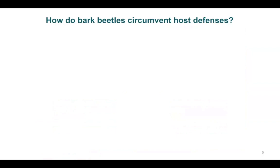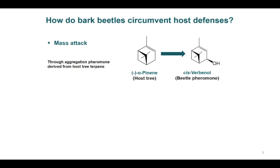Bark beetles feed on phloem tissues rich in different chemicals such as terpenes and phenolics. The interesting question is: how do bark beetles circumvent these host defenses? Beetles have found two ways to overcome the host tree defense. First, by mass attack — a single tree is attacked by thousands in a short interval of time using aggregation pheromone. The host tree monoterpene alpha-pinene is oxidized by beetle enzymes to produce cis-verbenol, a beetle pheromone that signals conspecific beetles to aggregate on a single host tree.